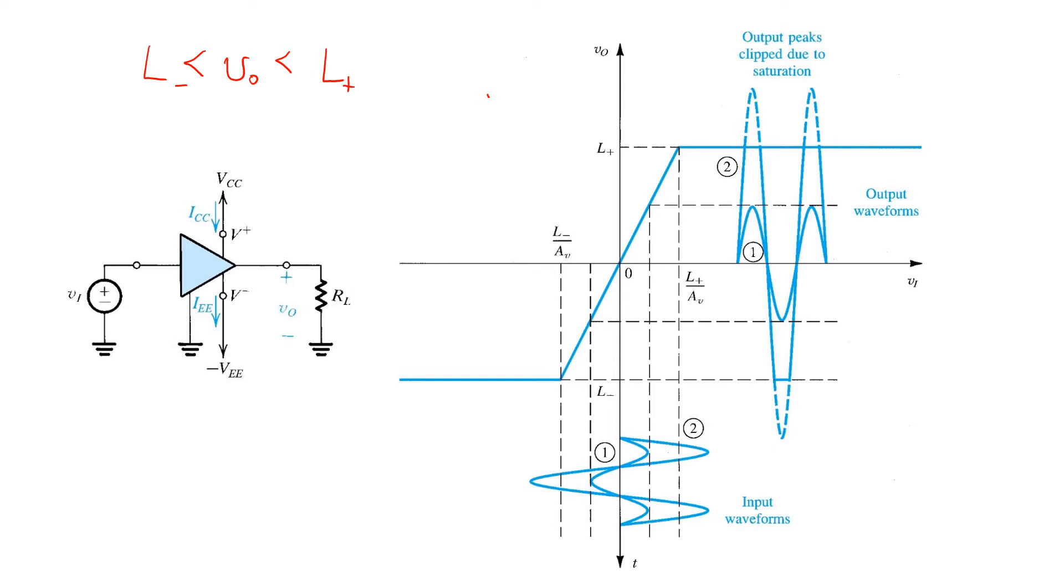Plotted on the right is the amplifier's output voltage VO versus input voltage VI. This amplifier has a voltage gain AV. So we see that as long as the output voltage is restricted within these limits, L+ and L-, the input and output voltage are linearly related, and the plot has a slope equal to the voltage gain AV.